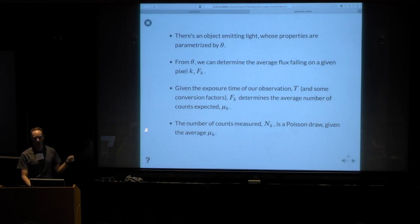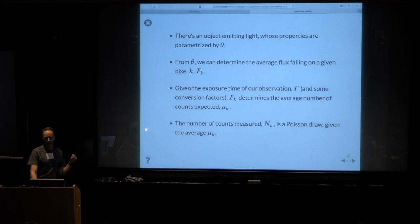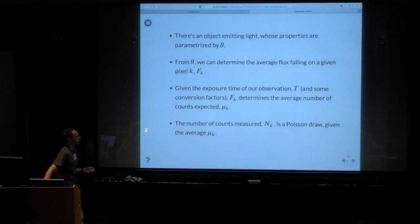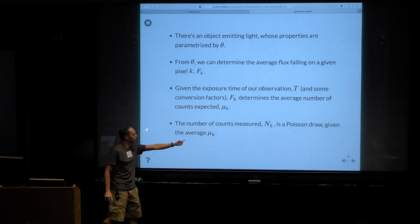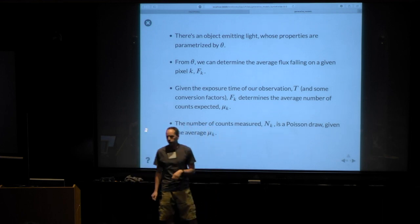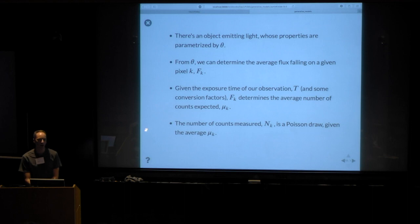In the last step, there definitely is a random element. We have an average number of expected counts from the model, but when we actually do a measurement, what we get is a Poisson random number. So we'll have that average mu, and then the data we get, capital N, will be Poisson distributed.